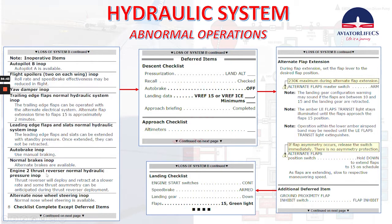Engine 2 thrust reverser normal hydraulic pressure inoperative — thrust reverser will deploy and retract at a slower rate and some thrust asymmetry can be anticipated during thrust reverser deployment. Alternate nose wheel steering inoperative — normal nose wheel steering is available. Checklist complete except deferred items. When doing the descent checklist, pay attention — auto brake will be off. For landing data, remember we are landing with flap 15 so we need to set Vref 15 or Vref ice.